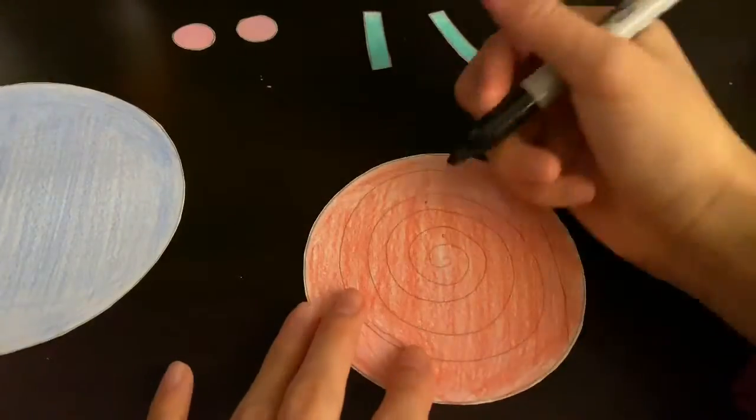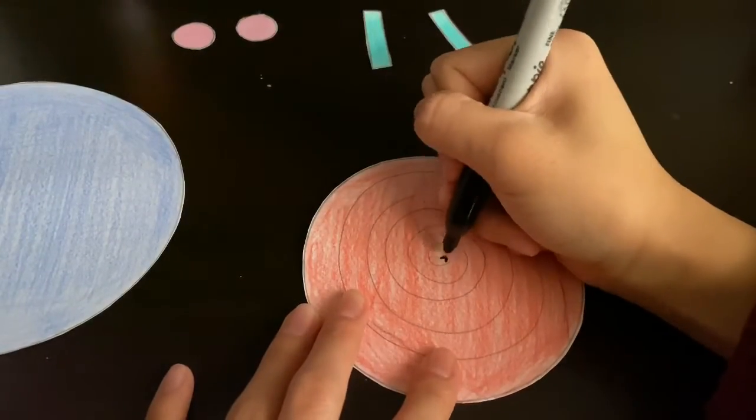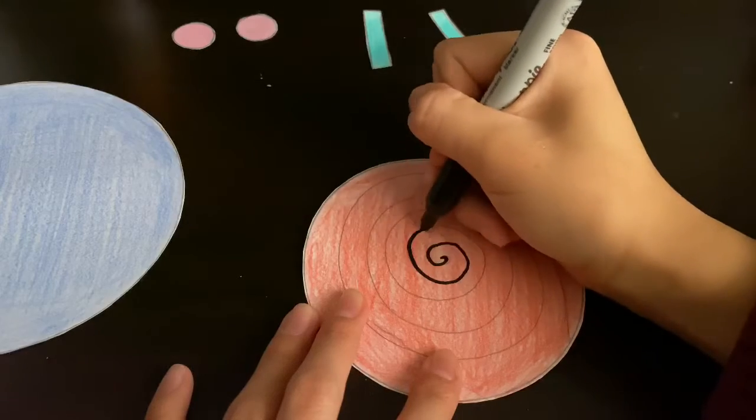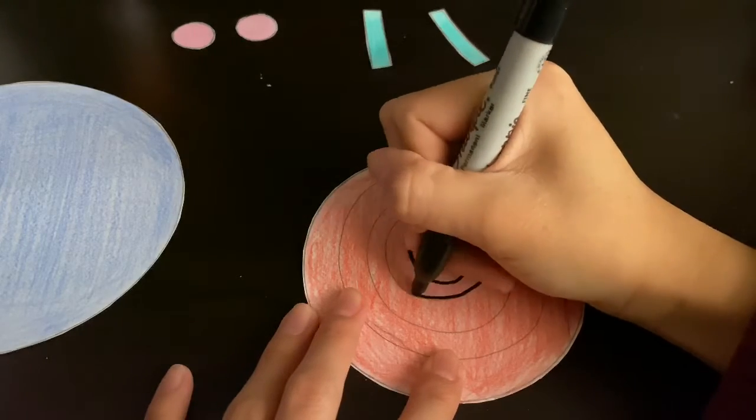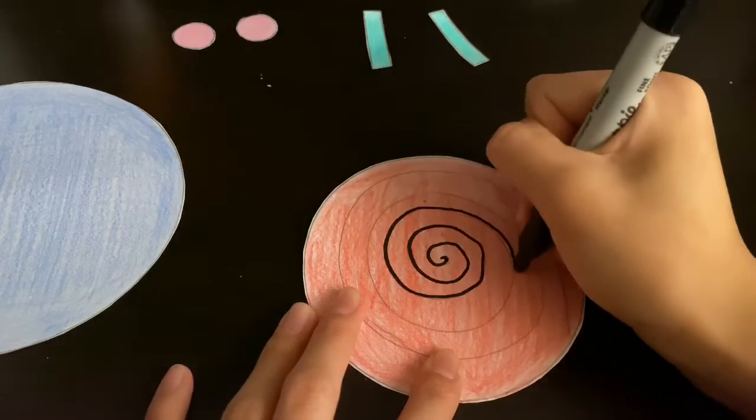Now we're going to get our medium circle. This circle is going to be the snail's shell so you can decorate it however you want.